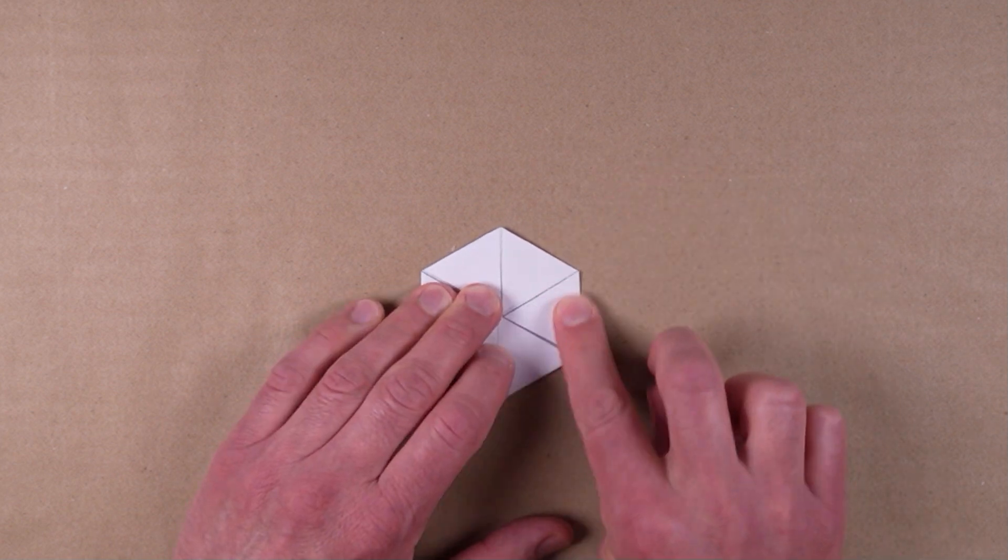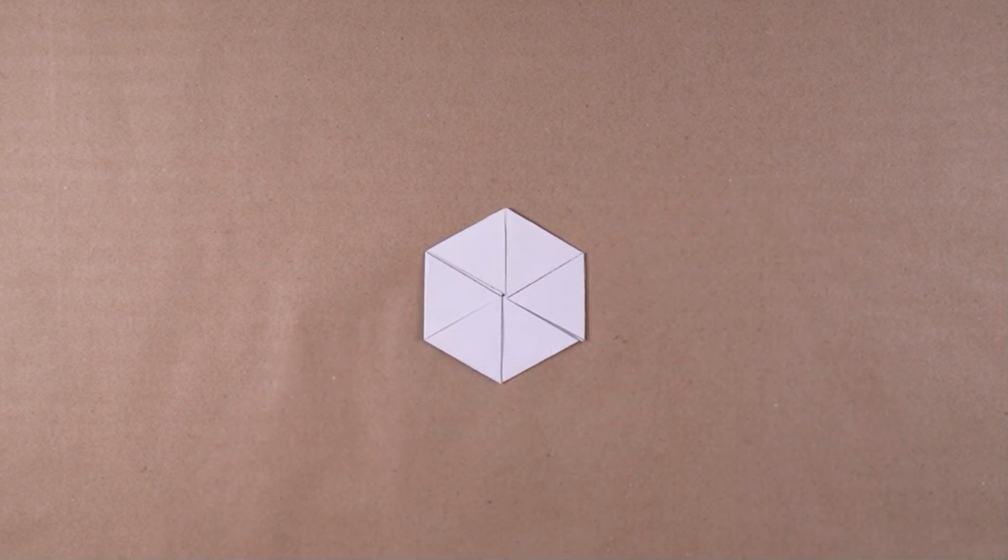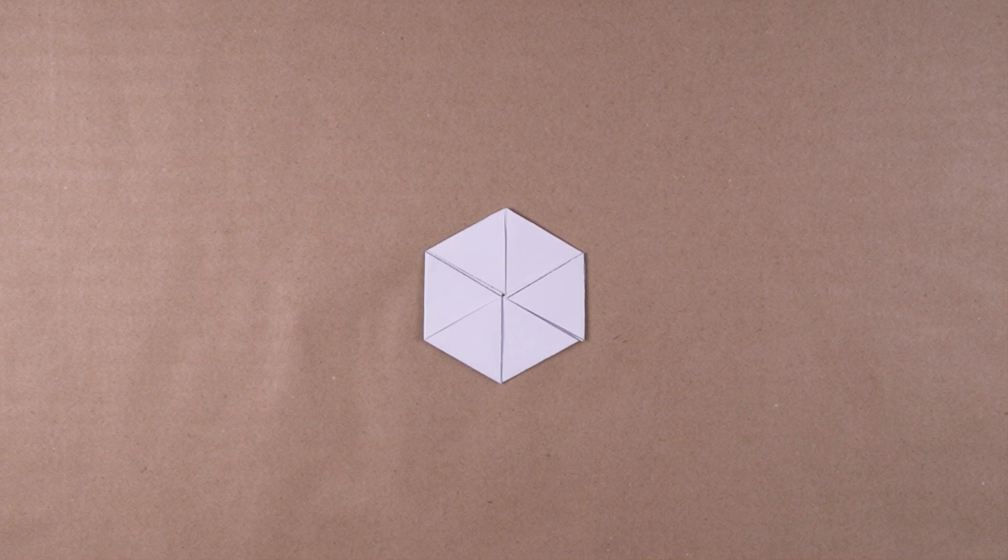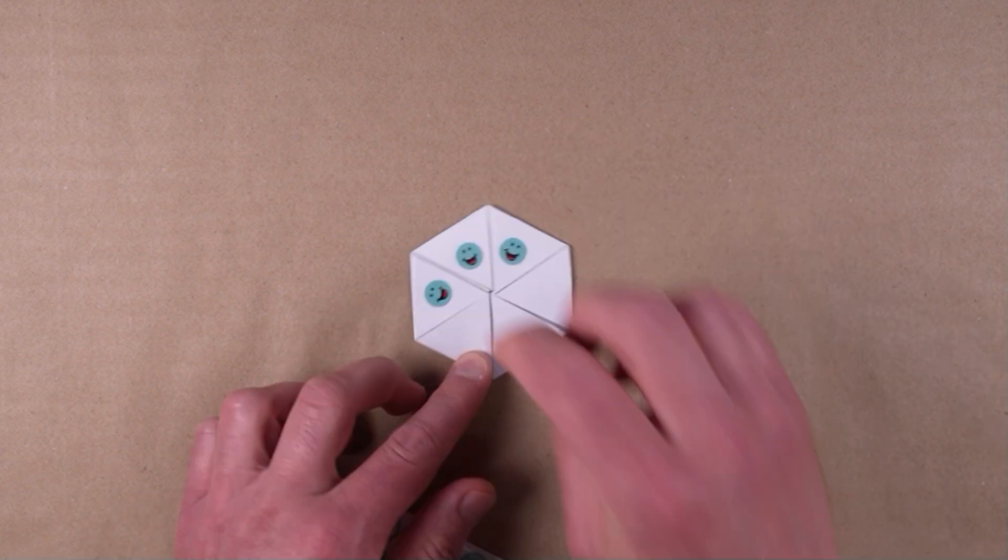Now you're ready to decorate the faces of your hexahexaflexagon. Here, I'll use a different colored sticker on each face's triangles.